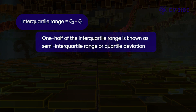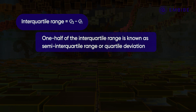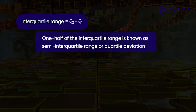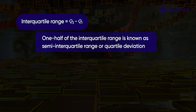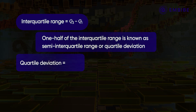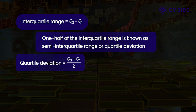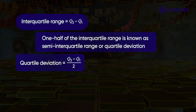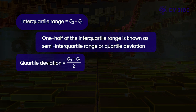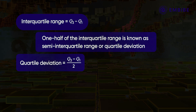One half of the interquartile range is known as the semi-interquartile range, or quartile deviation. That is, the quartile deviation is (Q3 minus Q1) divided by two. Now let us take an example to understand how to calculate the quartile deviation of an ungrouped data set.